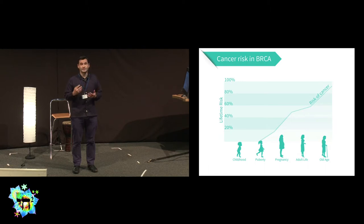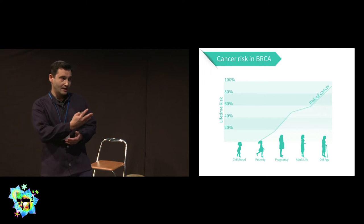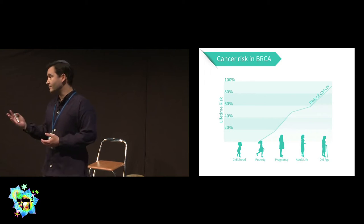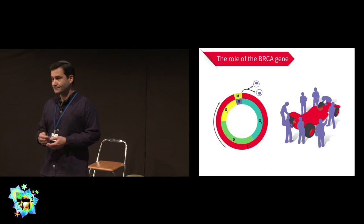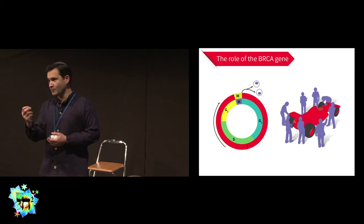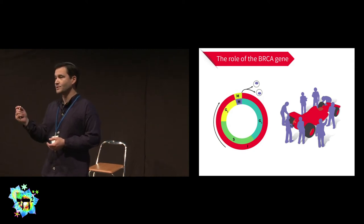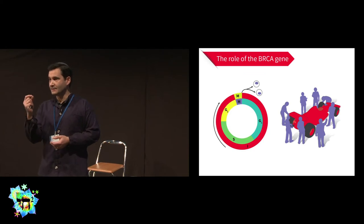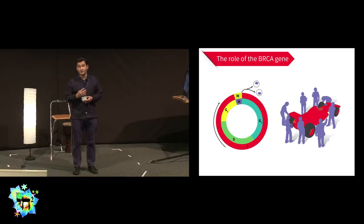It really does confer a very severe disease burden. At the age of 80, the risk of cancer is about 80%. What does the BRCA gene do? Think about it a bit like a pit stop in a Formula One race. In the cell cycle, where one cell becomes two cells, it checks like a spell check for errors.